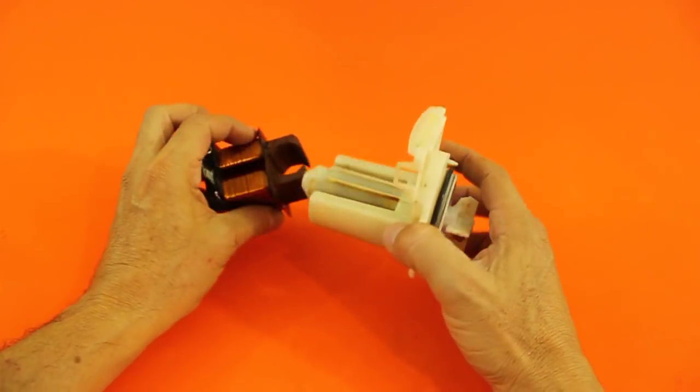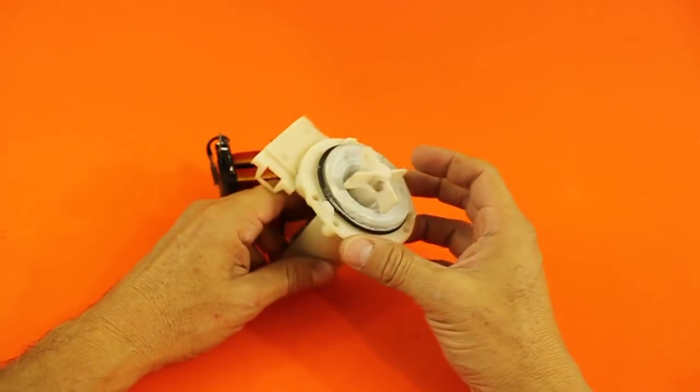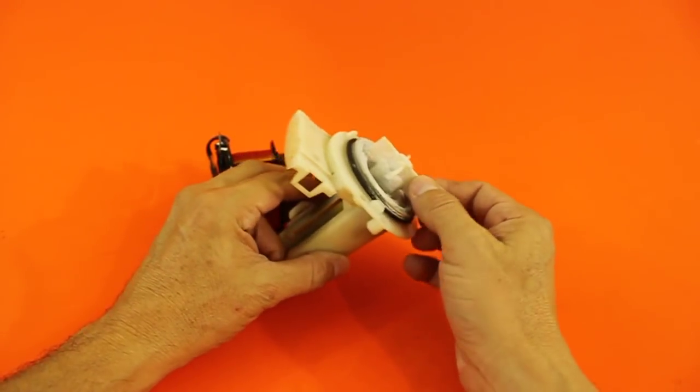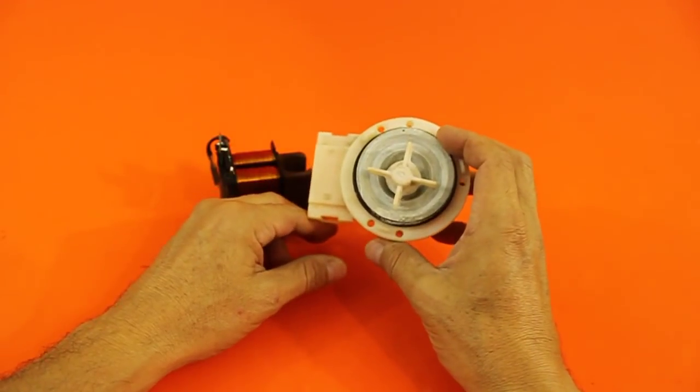It is essentially an electric motor that makes these blades rotate and force the water out of the washing machine.